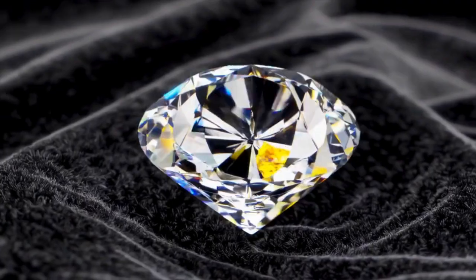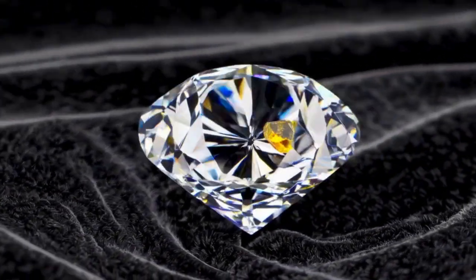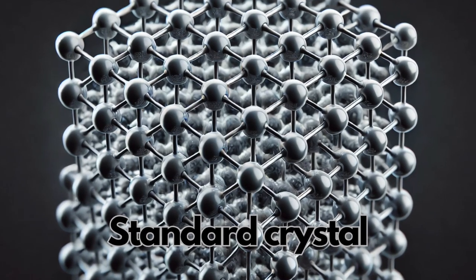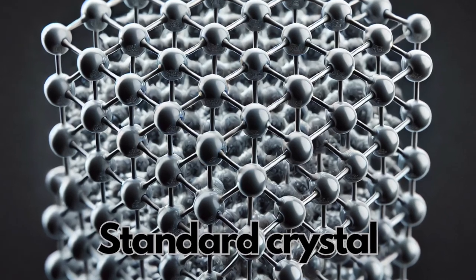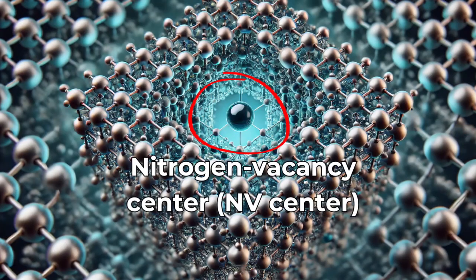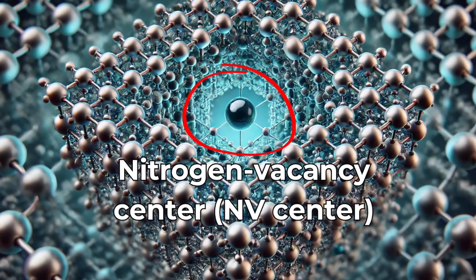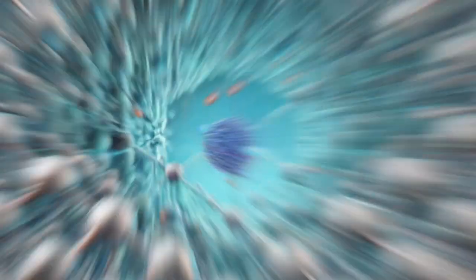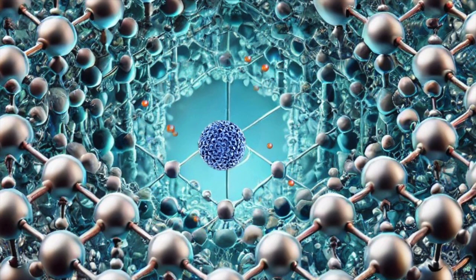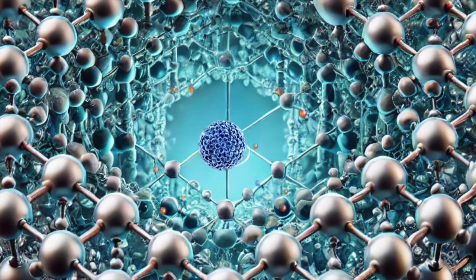NV centers form when a carbon atom in the crystal is replaced by a nitrogen atom, creating a vacancy. These nitrogen vacancy centers have exceptional quantum mechanical properties. Because of this vacancy, we can isolate electrons, control their spins using laser and microwave pulses, and maintain stability for long periods, making them ideal for delicate quantum entanglement experiments.